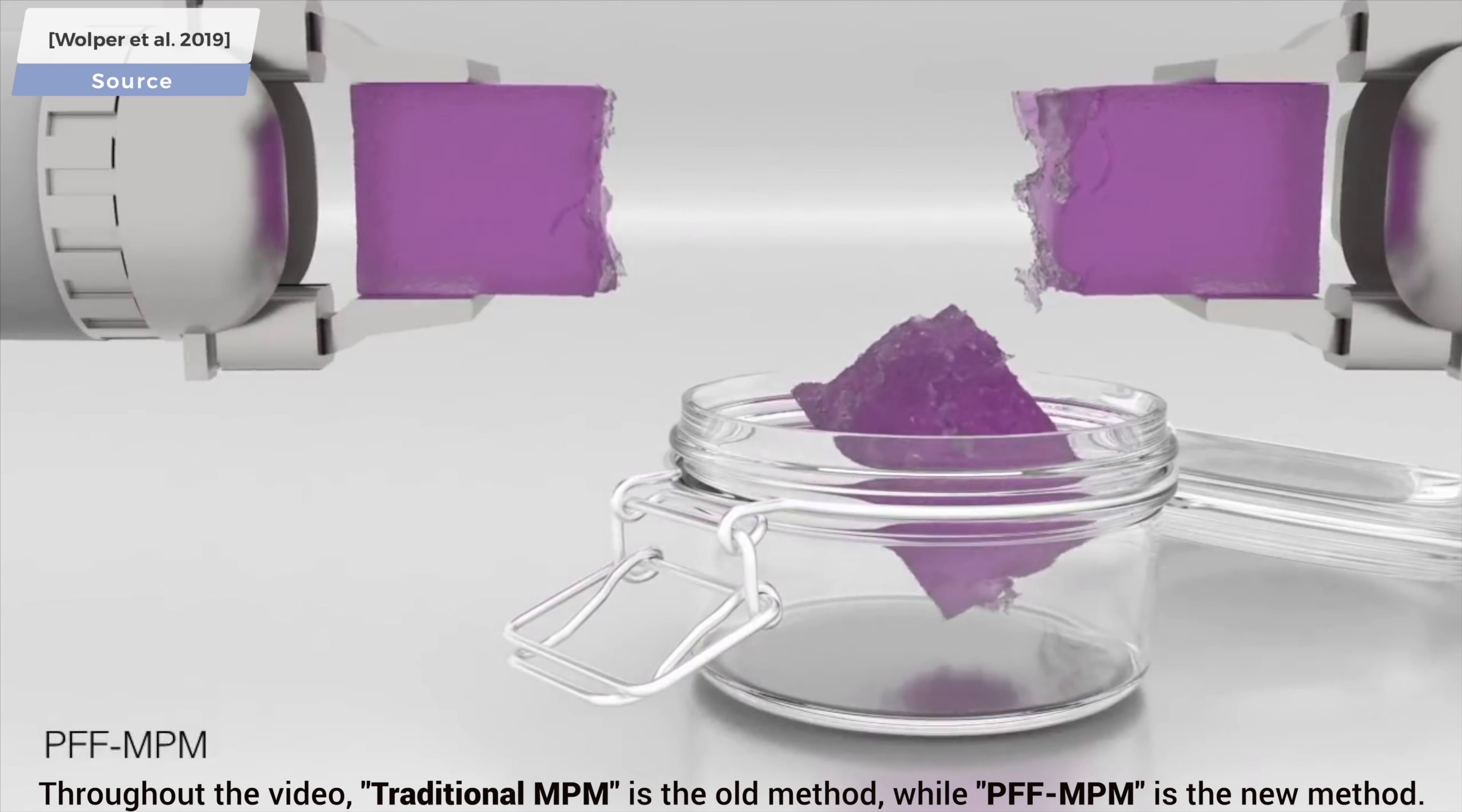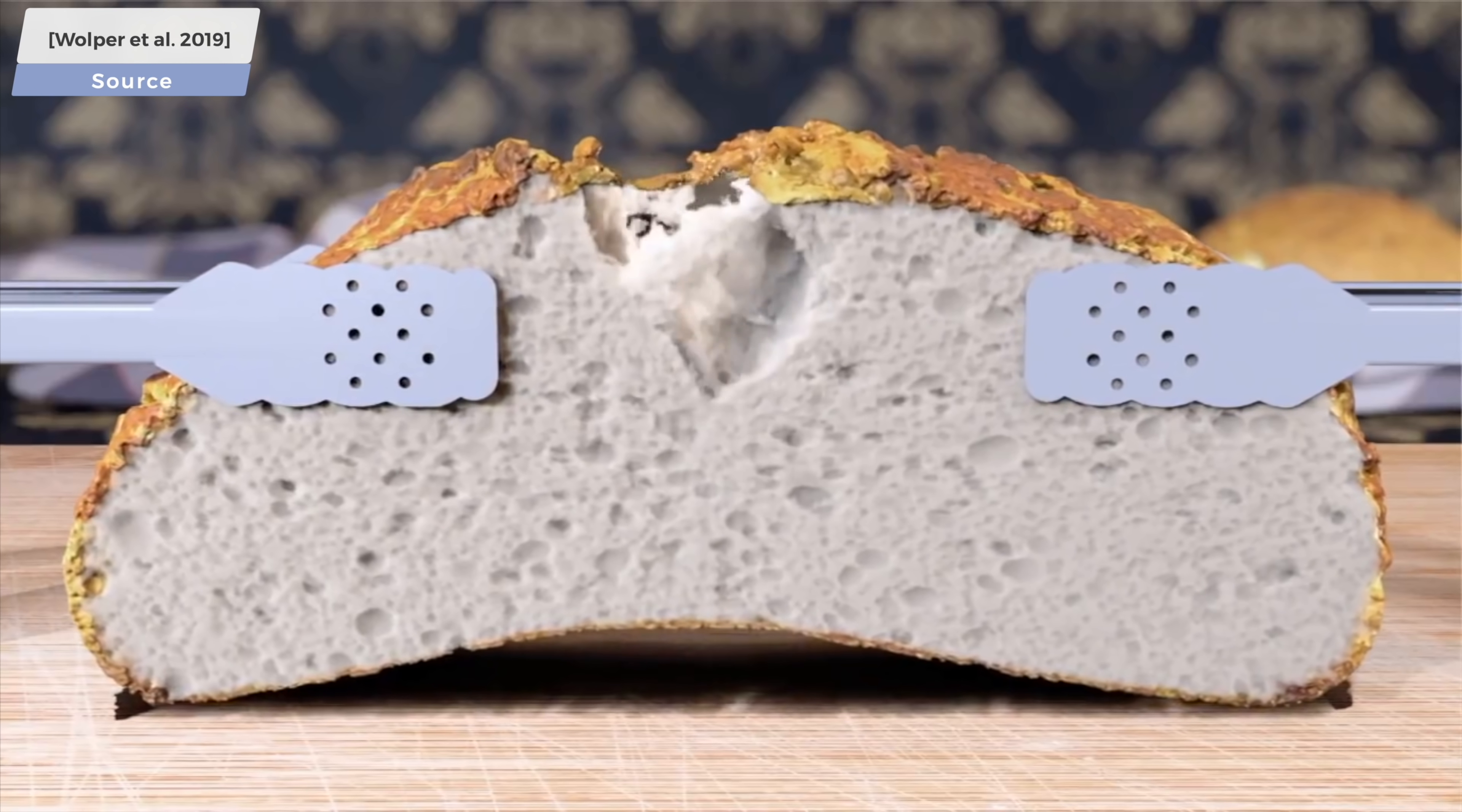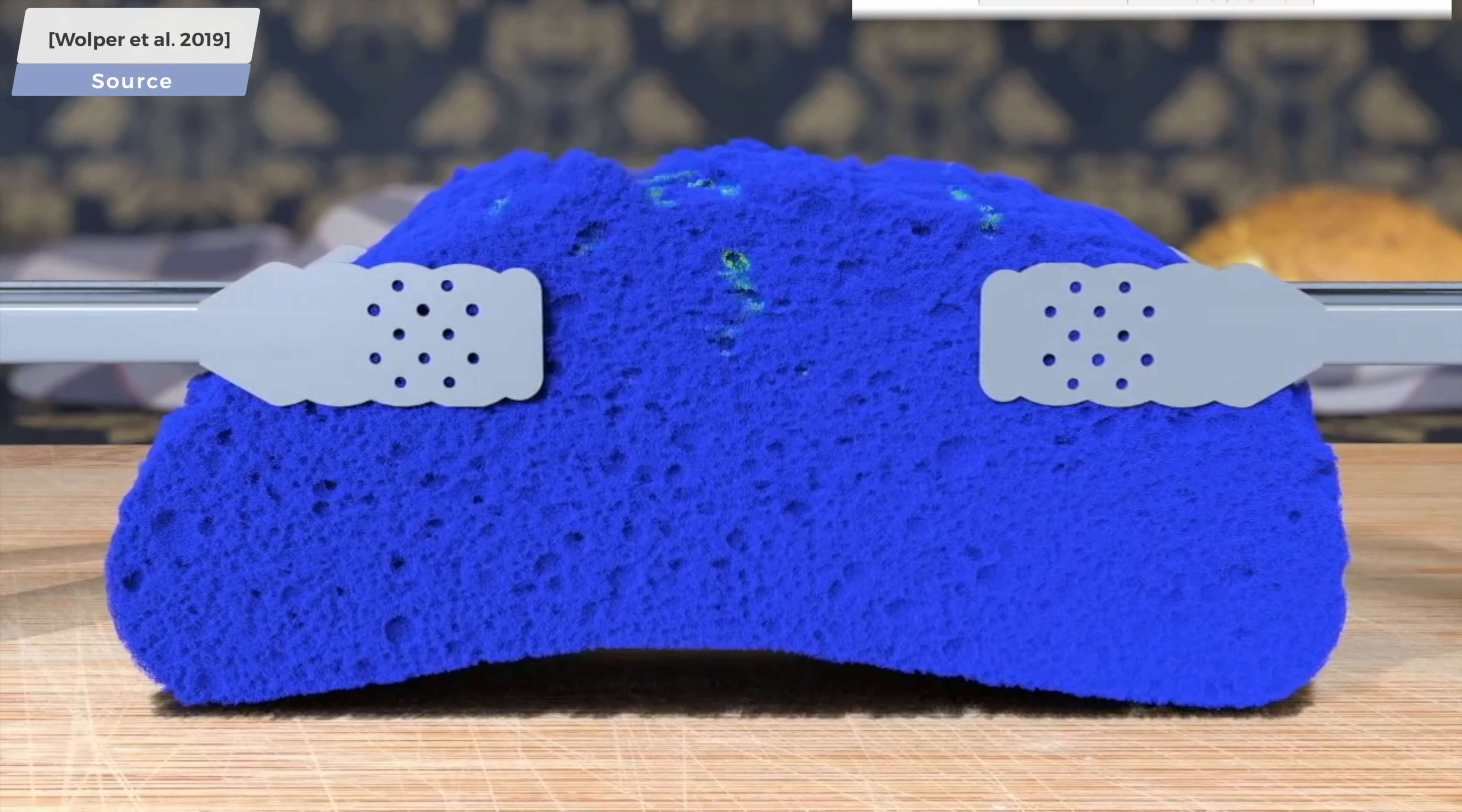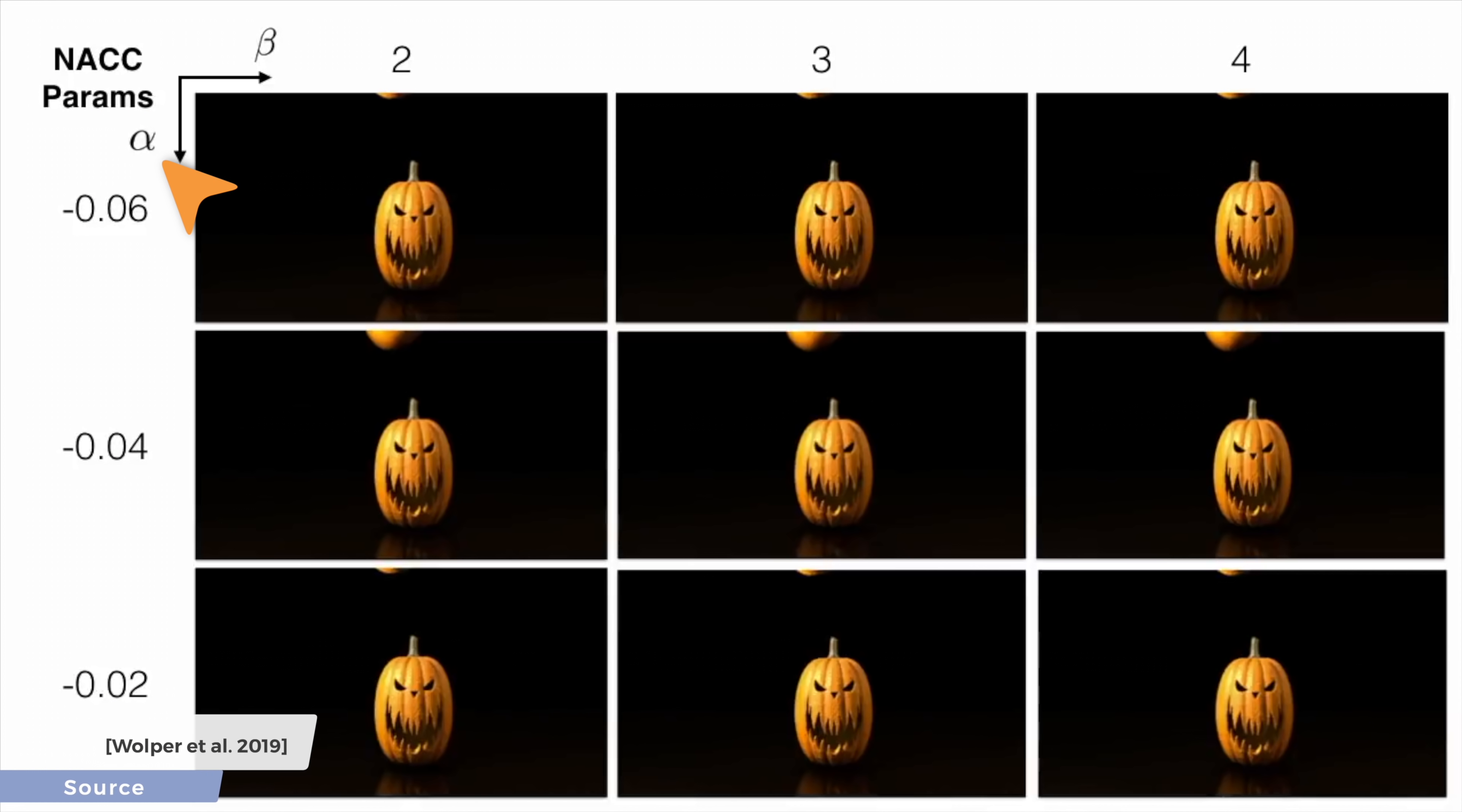Now, when an artist works with these simulations, the issue of artistic control often comes up. After all, this method is meant to compute these phenomena by simulating physics, and we can't just instruct physics to be more beautiful. Or, can we? Well, this technique offers us plenty of parameters to tune the simulation to our liking. Two that we'll know today are the alpha, which means the hardening, and beta is the cohesion parameter.